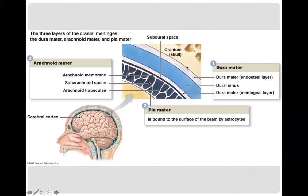Here is the dura mater in a picture. You have the cranium — your skull — and this is the dura mater depicting the outer membrane and the inner membrane. The blue color in between is your dural sinus, basically the area where blood vessels collect deoxygenated blood from your brain.